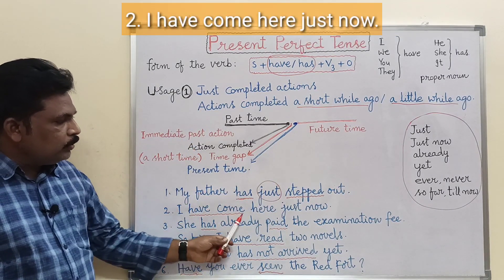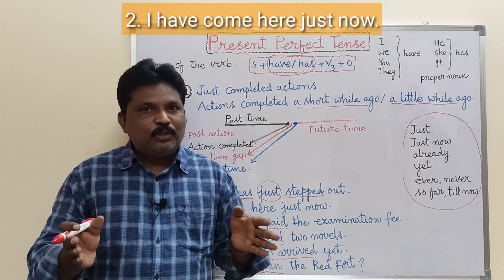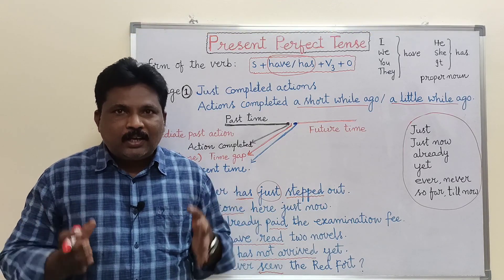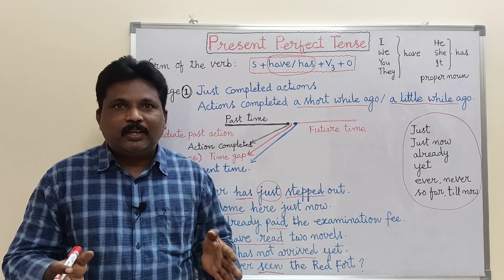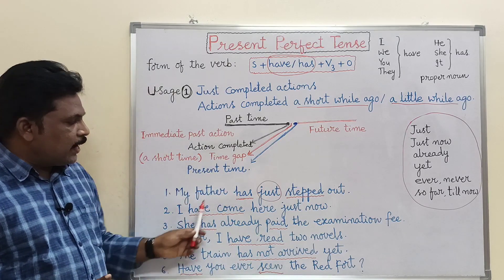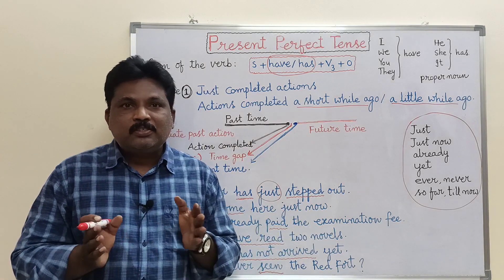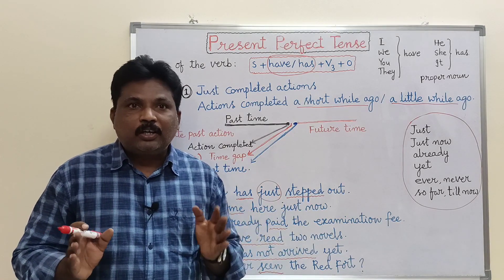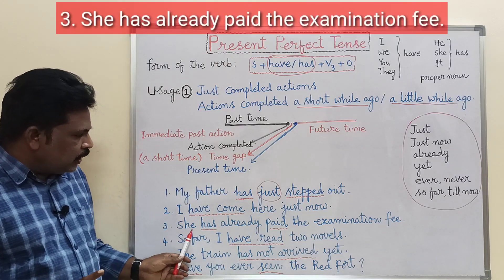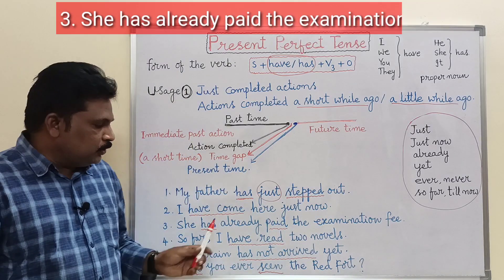Second example: 'I have come here just now.' When people ask 'When did you come here?', your answer is 'I have come here just now' — meaning not long ago, not a long time ago. Third example: 'She has already paid the examination fee.' This is also present perfect tense.